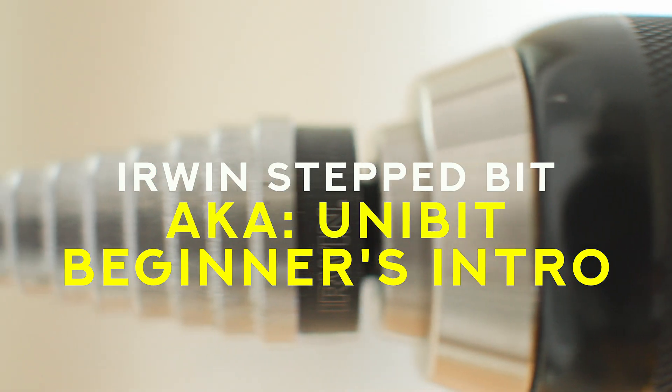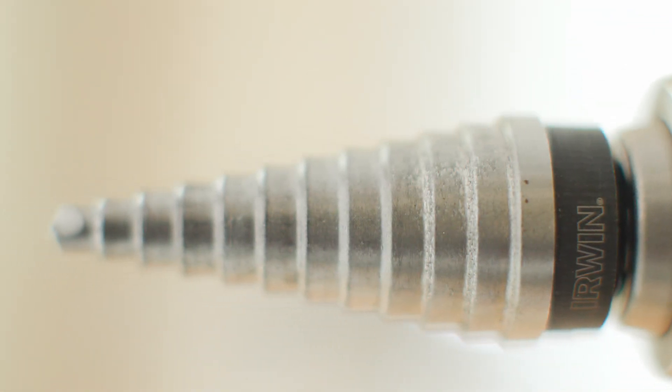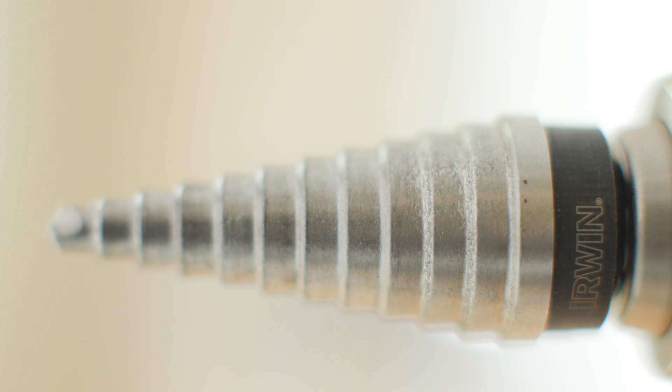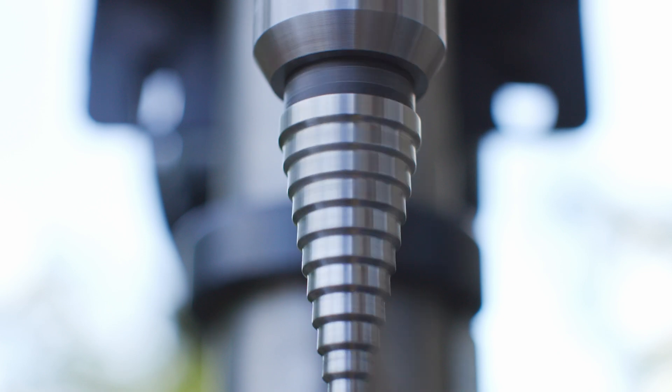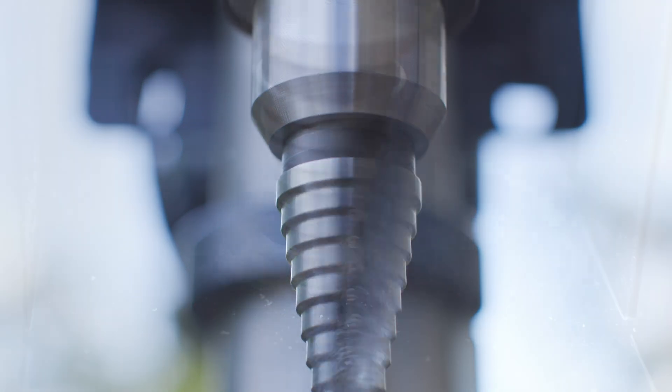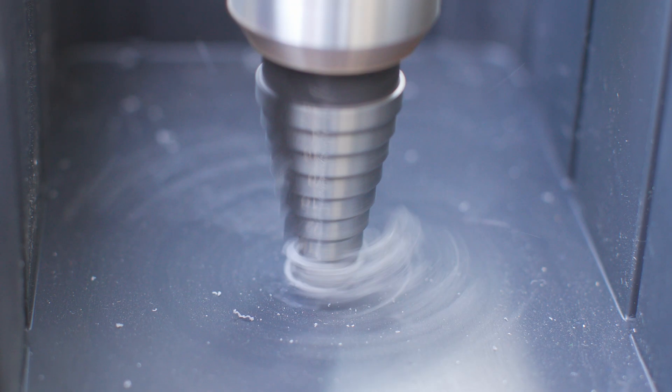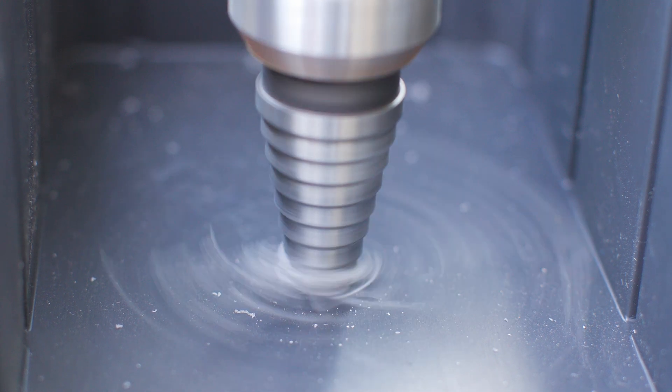Okay, this is an Irwin brand stepped bit. There's a lot of brands that make stepped bits. I'll leave an Amazon link in the comment section below if you want to see how much it costs in your neck of the woods. Essentially, as the bit moves into the material, the hole expands with each step. So you can use it to create a hole or you can use it to widen an existing hole.